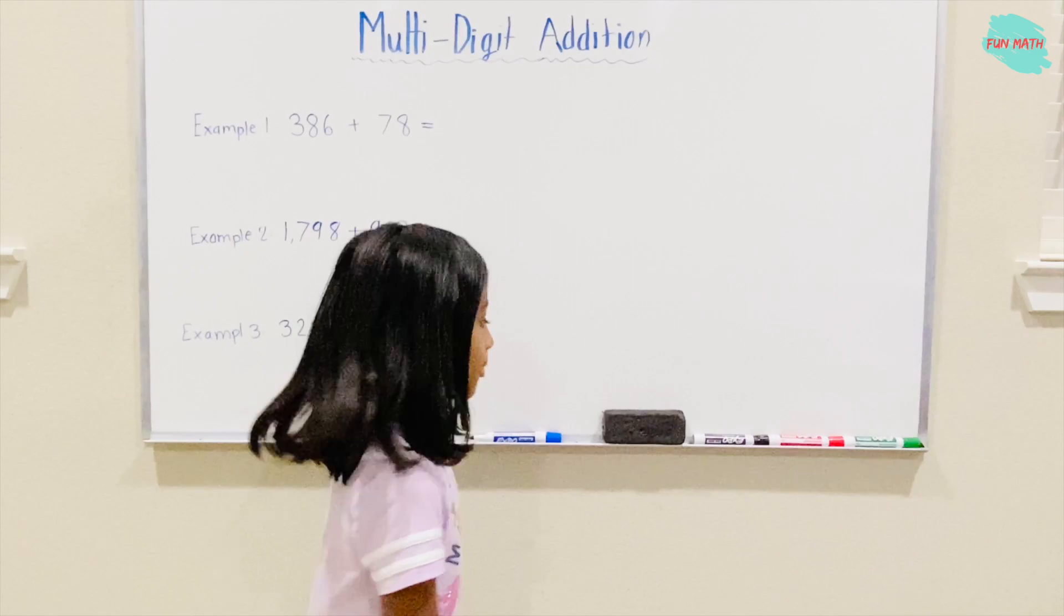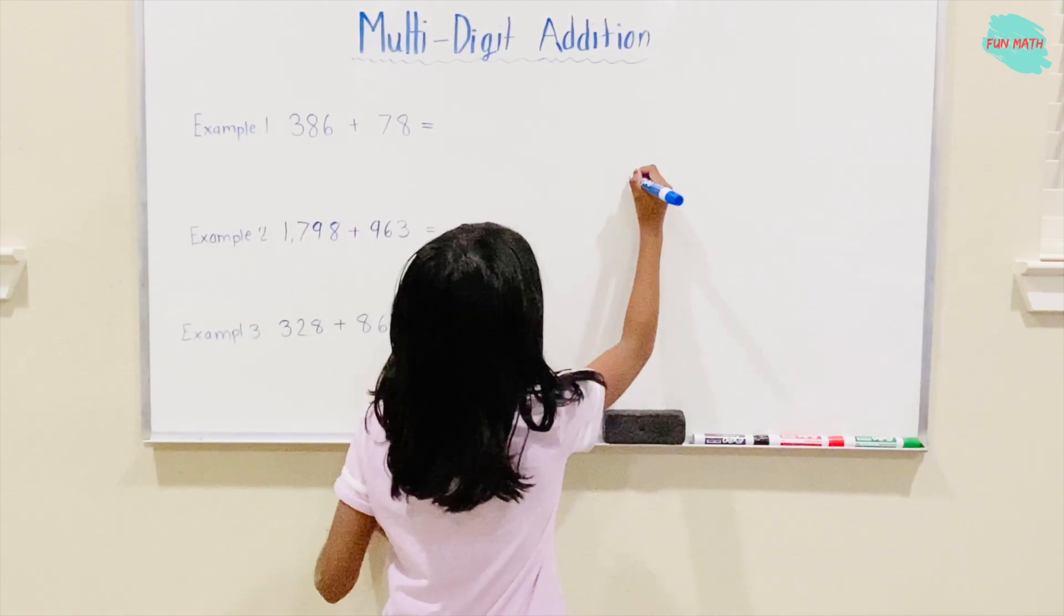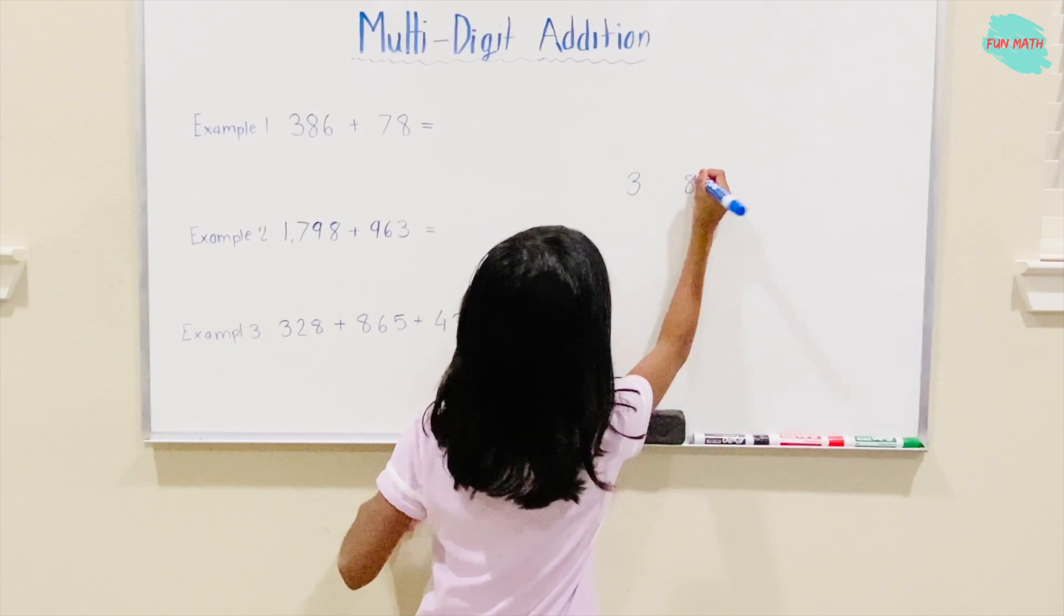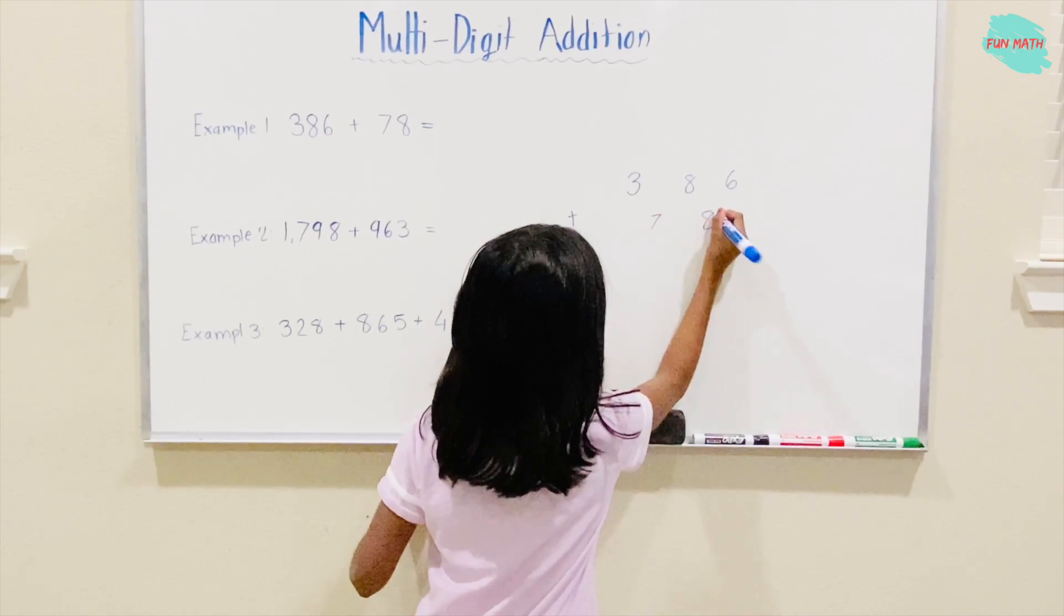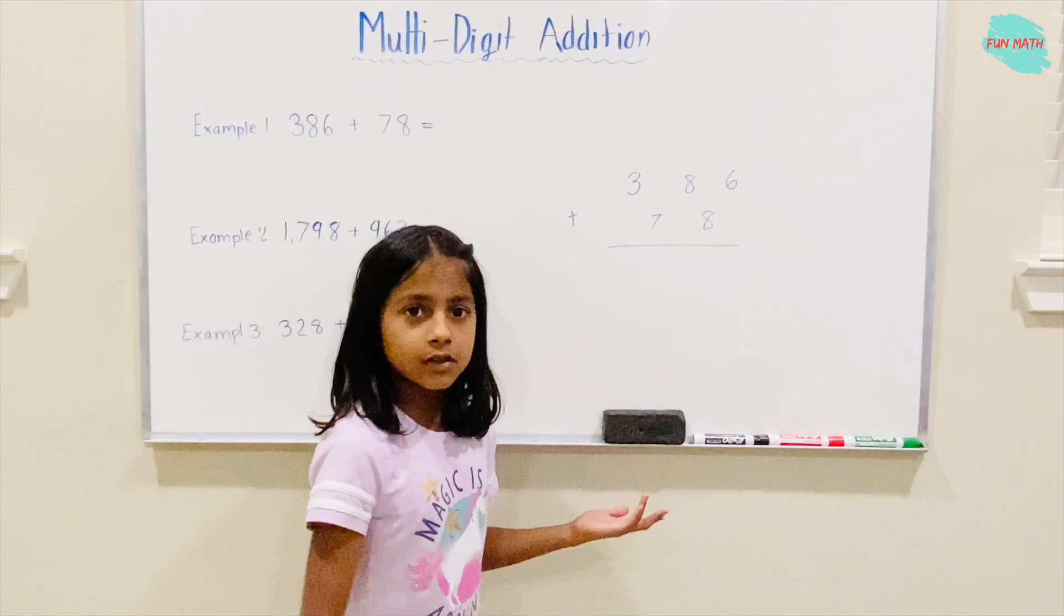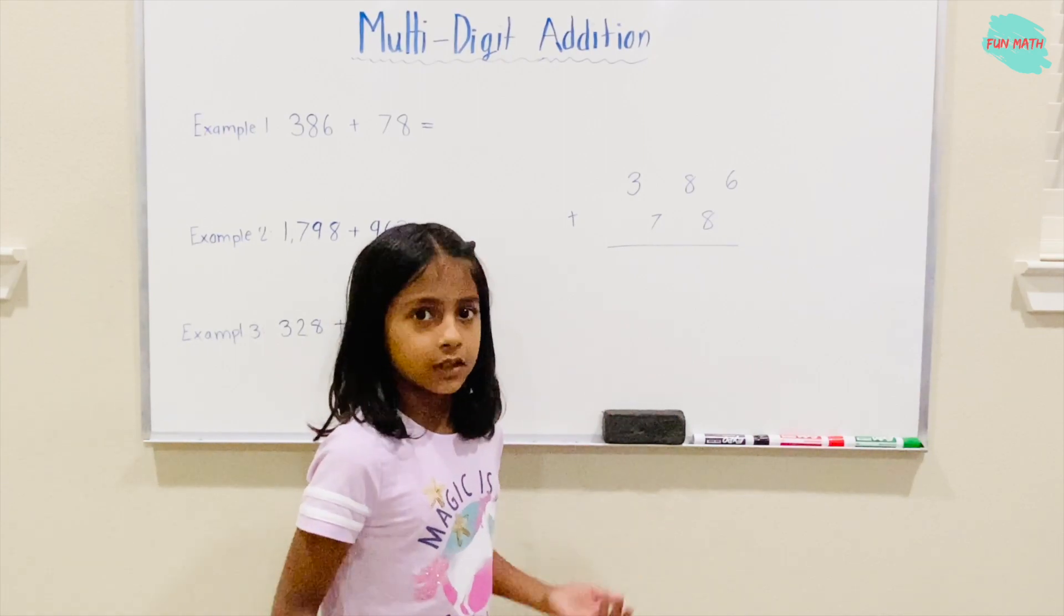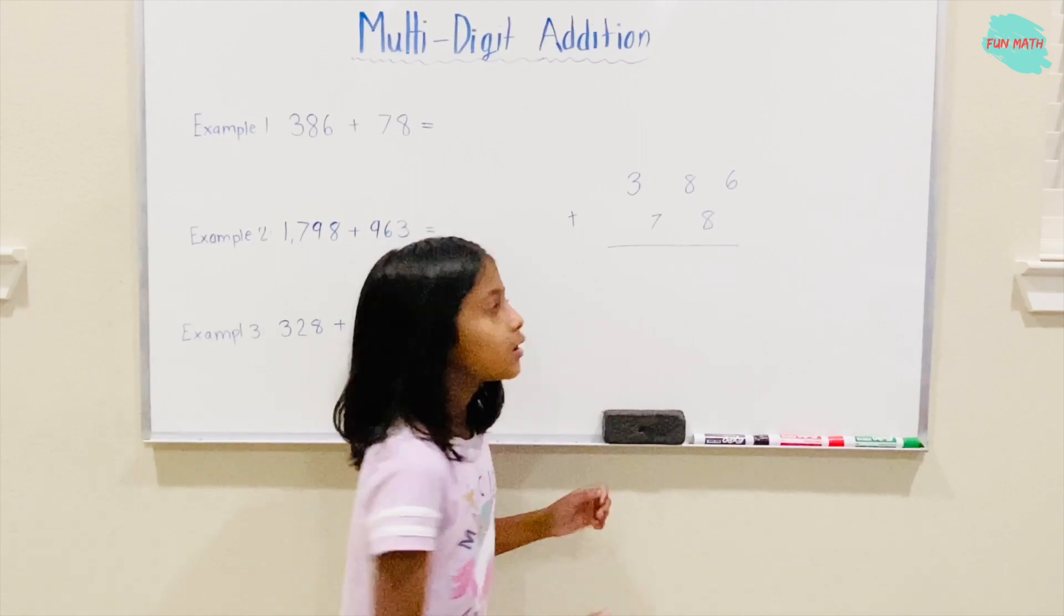Okay, let's solve Example 1. 386 plus 78. Does this look right to you? I don't think so. We have to solve it correctly to get our answer.